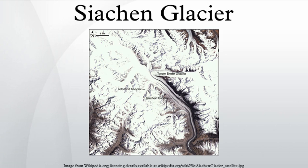The glacier's melting waters are the main source of the Nubra River in the Indian region of Ladakh, which drains into the Shyok River. The Shyok in turn joins the 3,000 km long Indus River, which flows through Pakistan. Thus the glacier is a major source of the Indus and feeds the largest irrigation system in the world.